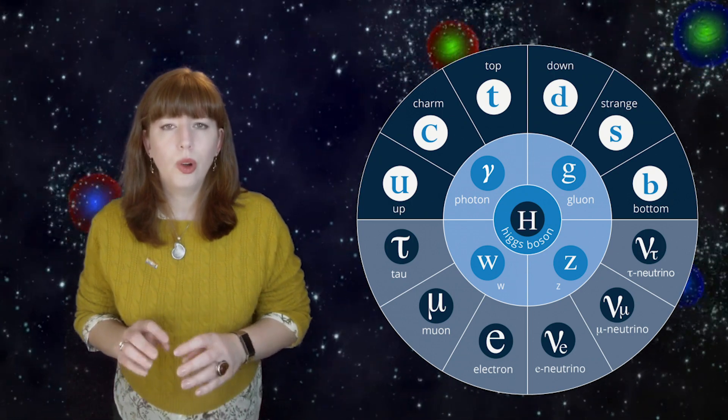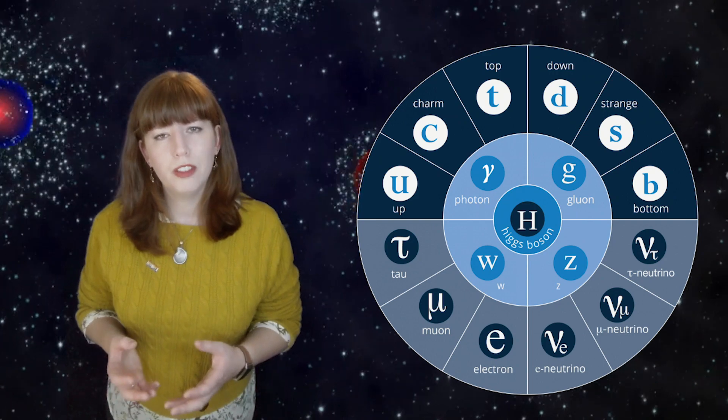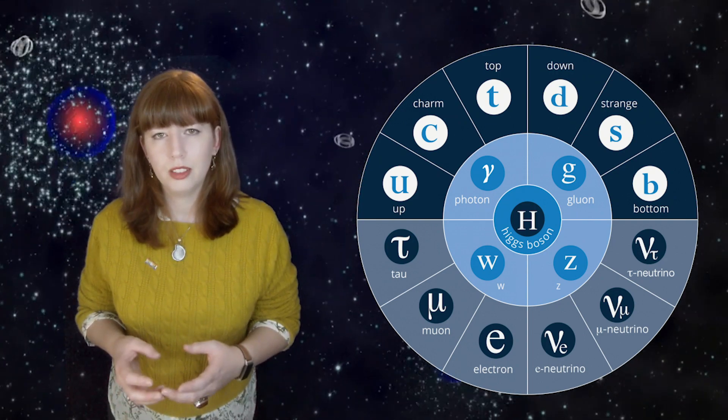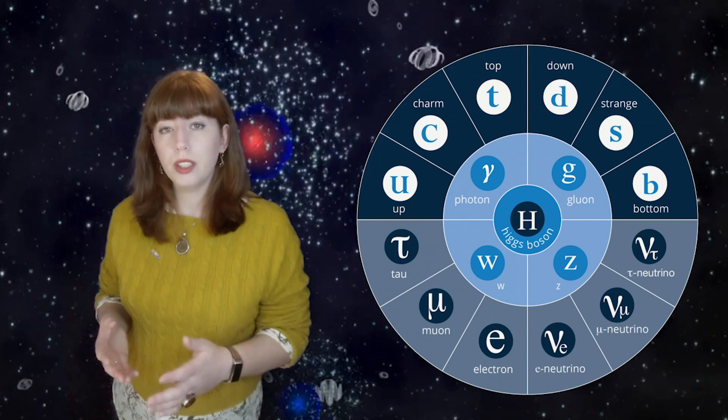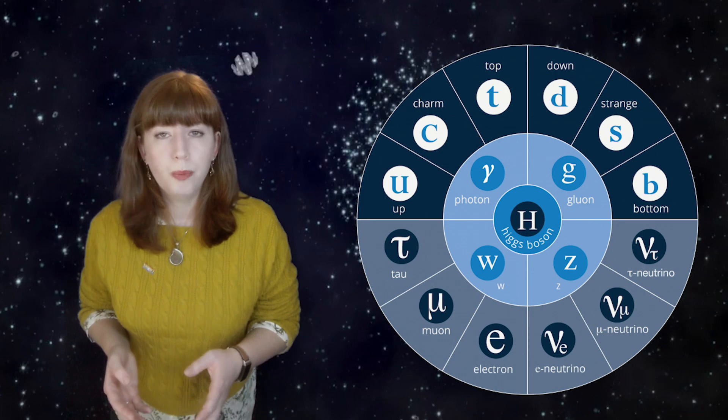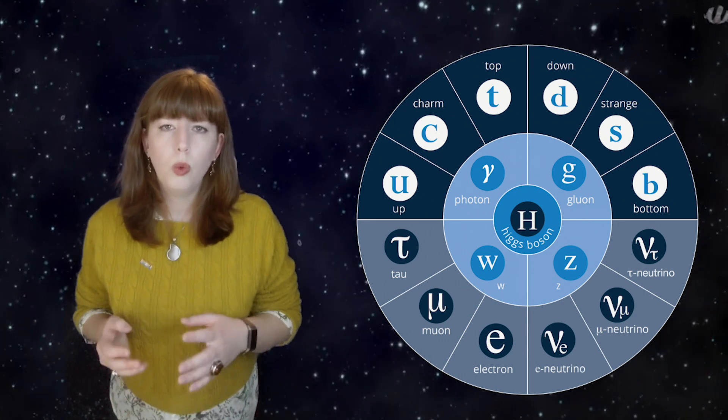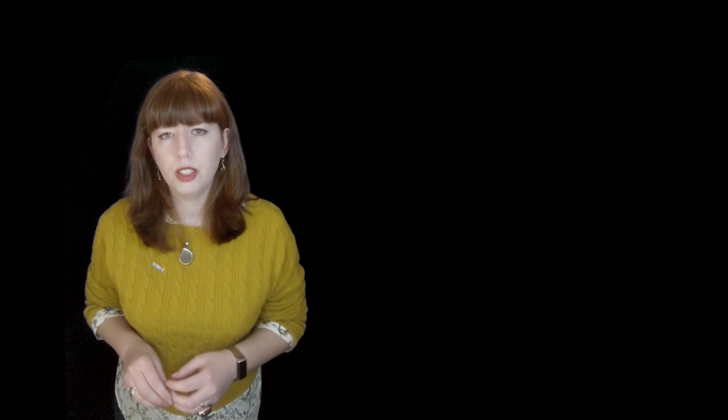And so all of these particles make up our recipe book for building a universe. Or do they? We also have their equivalent antimatter particles. But, for example, we don't understand why there was more matter than antimatter at the beginning of our universe.